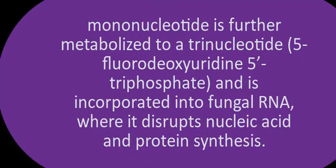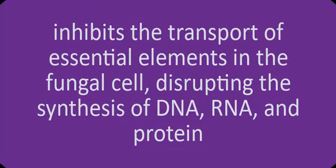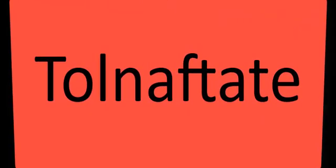The unnatural mononucleotide is further metabolized to a trinucleotide, 5-fluorodeoxyuridine-5-triphosphate, and is incorporated into fungal RNA, where it disrupts nucleic acid and protein synthesis. Ciclopirox inhibits the transport of essential elements in the fungal cell, disrupting the synthesis of DNA, RNA, and protein.